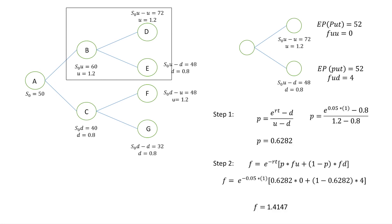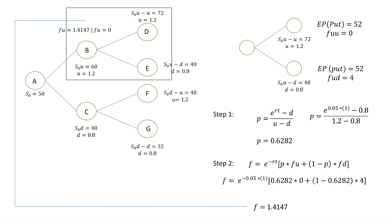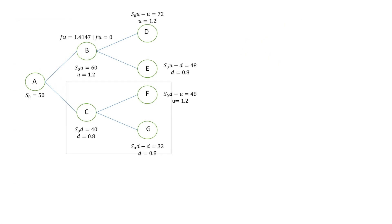Here is where the American option differs from the European option. For node B, we have two values: F = 1.4147 from solving triangle BDE, and the option payoff at node B where the price is $60. Since the market price of $60 exceeds the exercise price of $52, we will not exercise the option, so the payoff is 0. We compare 1.4147 and 0 — the larger is 1.4147, so FU = 1.4147.